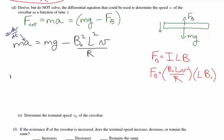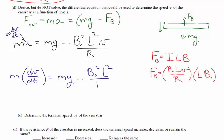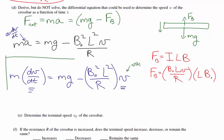So we have mass times acceleration equals Mg minus B₀²L²V/R. Since we want a differential equation, we replace acceleration with dV/dt. The differential equation is M(dV/dt) = Mg − (B₀²L²/R)V. Everything in those coefficients — B₀, L, R, M, G — are constants, while V is our function of time and dV/dt is its derivative. That is the differential equation.